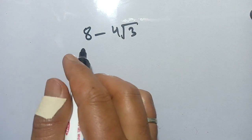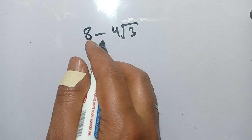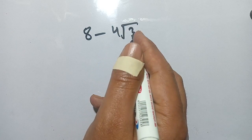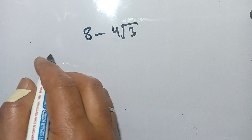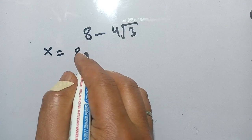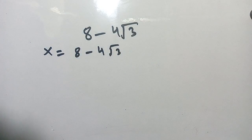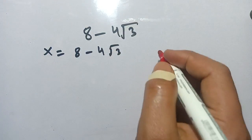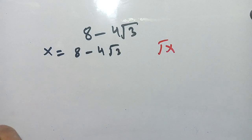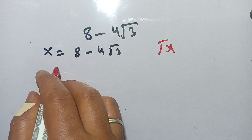Hello everyone. In today's class we are going to find the square root of the term 8 minus 4 square root 3. Let us solve this. Suppose that x is equal to 8 minus 4 square root 3. Now we find the square root of x — what is the value of square root of x?